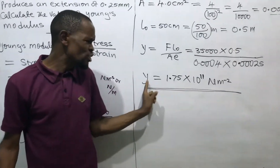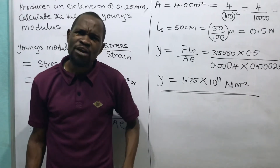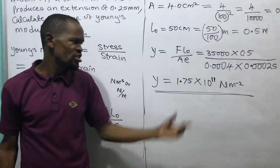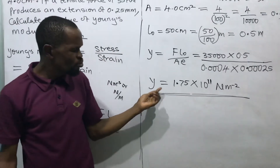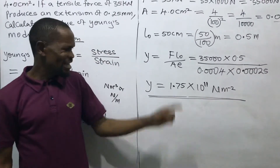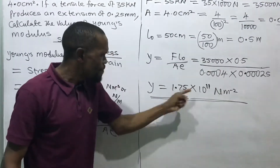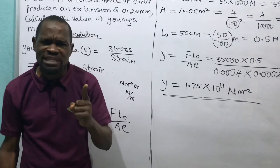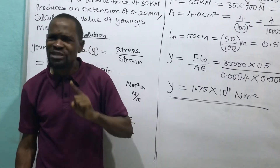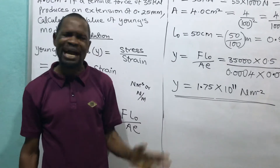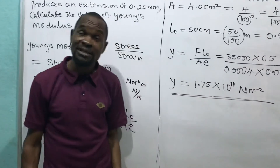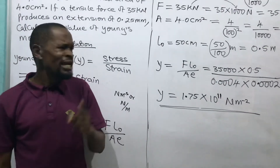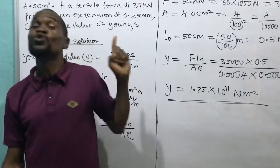If you don't include the unit, you are calling Young's modulus a bastard with no identity — because the unit is what defines it, not just the magnitude. If you write the magnitude without the unit, you will be marked zero. You must note the units of every parameter in physics. The next video will show how we derive units.